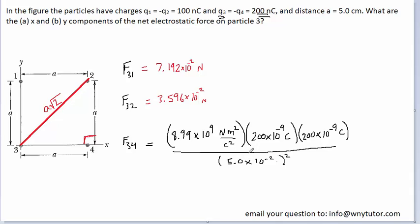For the final Coulomb's Law calculation, we use the magnitude of the charge on particle 4, since we're calculating the force that 4 exerts on 3. Although particle 4 has a negative charge, its magnitude is 200 nanocoulombs. The distance between particle 4 and 3 is simply A — no square root of 2 needed here. This gives 1.438 times 10 to the minus 1 Newtons.